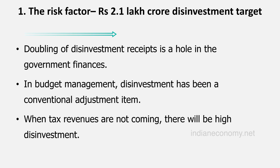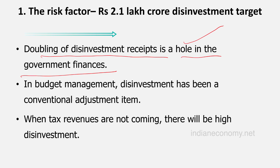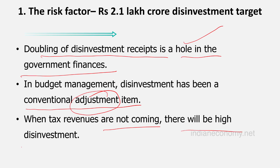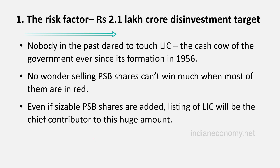This represents a doubling of disinvestment receipts and is a major haul in the government's finances. In budget management, disinvestment has been a conventional adjustment item. When tax revenues are not coming in — as in this year and last year — the government sets high disinvestment targets. So disinvestment serves as a compensating mechanism when conventional revenues fall short.